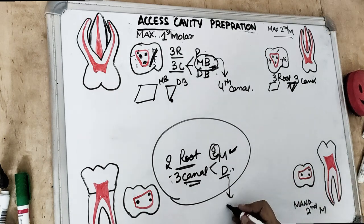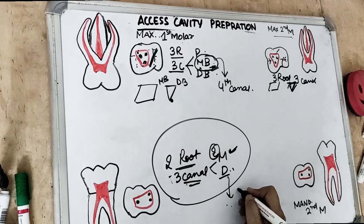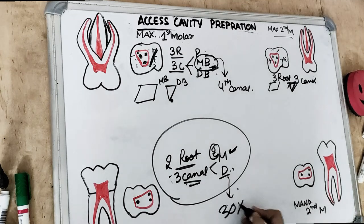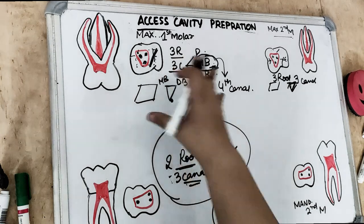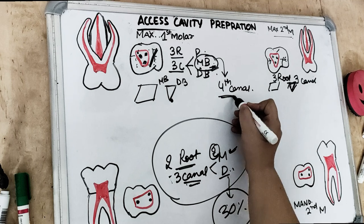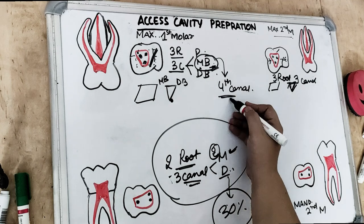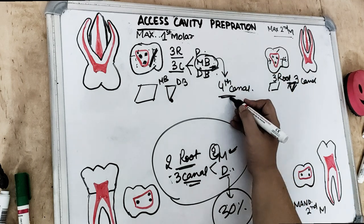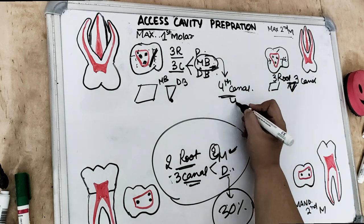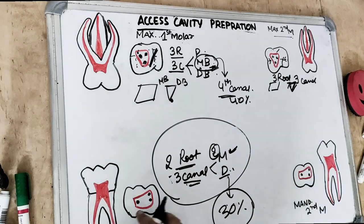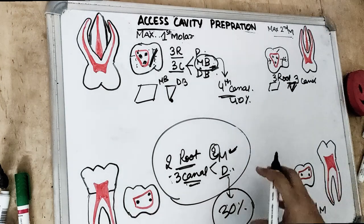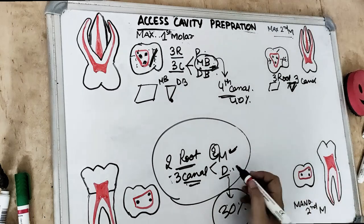There are 30% chances that a fourth canal is present in the mandibular first molar, located in the distal root. For the maxillary first molar, the chances of a fourth canal in the mesiobuccal root are 40%. So: 40% fourth canal for maxillary first molar, and 30% fourth canal for mandibular first molar.